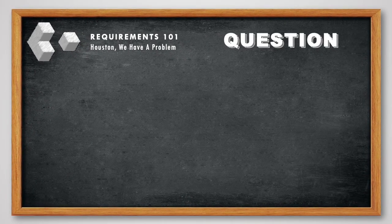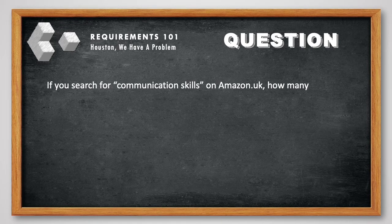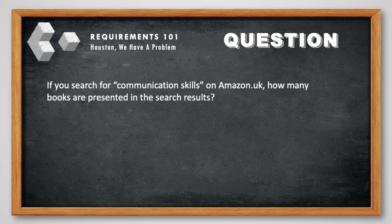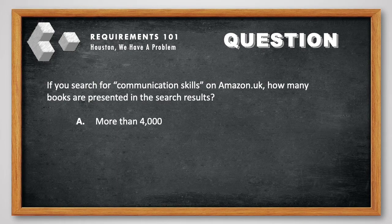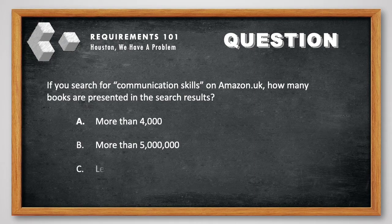Question 2. If you type in Communication Skills in Amazon UK's search field, how many books are presented in the search results? Is it A, more than 4,000? Is it B, more than 5 million? Or is it C, less than 2,000?